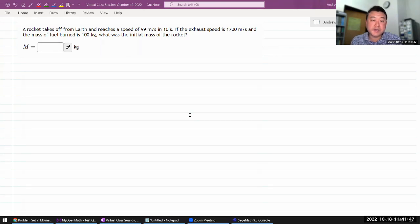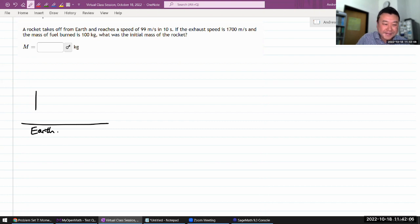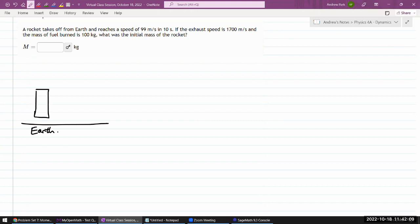So this question says a rocket takes off from Earth and reaches some speed in 10 seconds. I wonder if I'm supposed to take into account the gravity during all this, but well, let's see. So we have some rocket of some initial mass M, and it's taking off from Earth and reaching some height with a different mass and moving at some speed, 99 meters per second in 10 seconds.